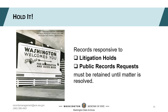Agencies can choose to hold onto records past retention for a variety of different reasons, but there are a couple of situations where you would absolutely need to hang onto your records past their minimum retention. One is in the case of a litigation hold — if there's a lawsuit pending or ongoing and you have records responsive to that litigation, you would need to keep those records until the litigation has been resolved or the hold is lifted. The second situation is if there's a public records request. If a public records request comes in for records slated for destruction, you'll still need to provide them because they are still in your possession. Once the request is fulfilled, you can resume with the destruction or transfer as planned.